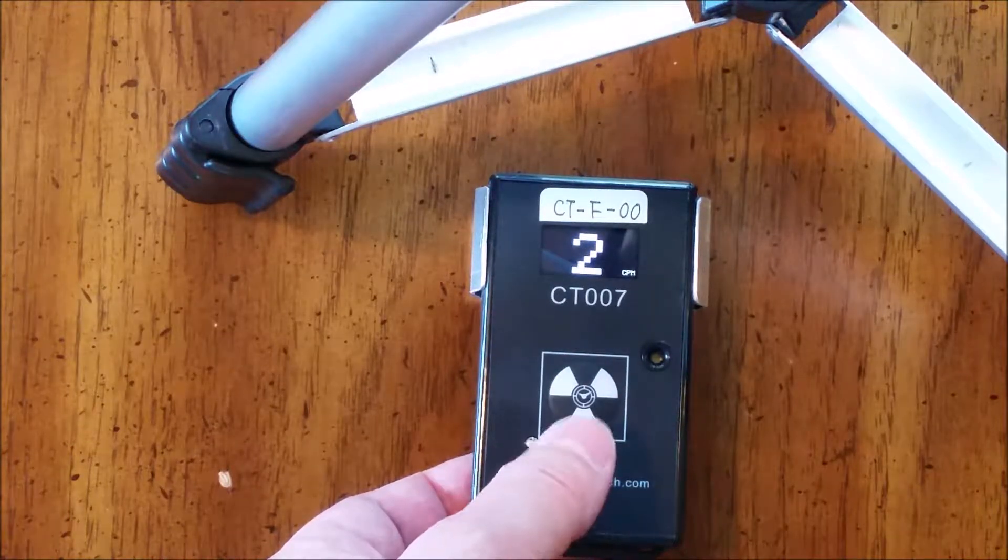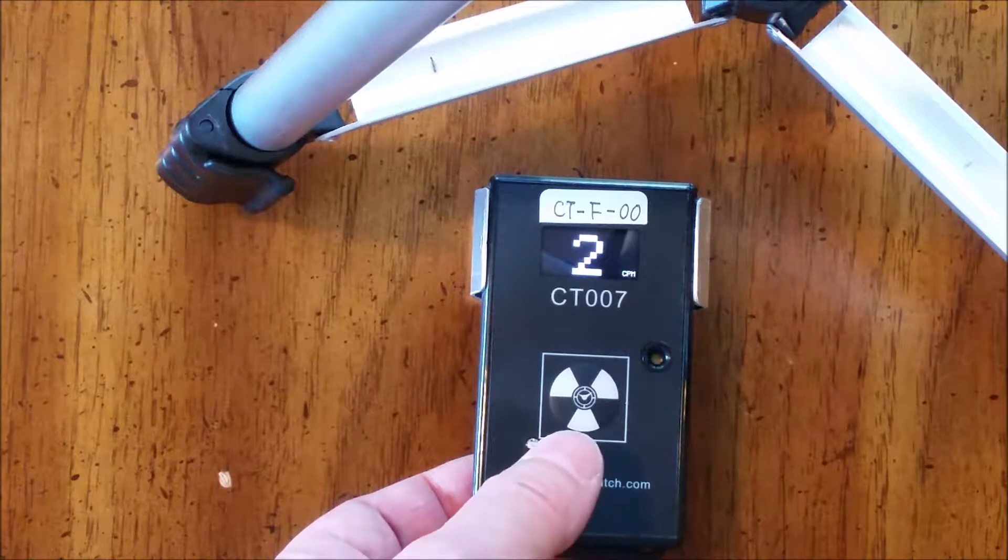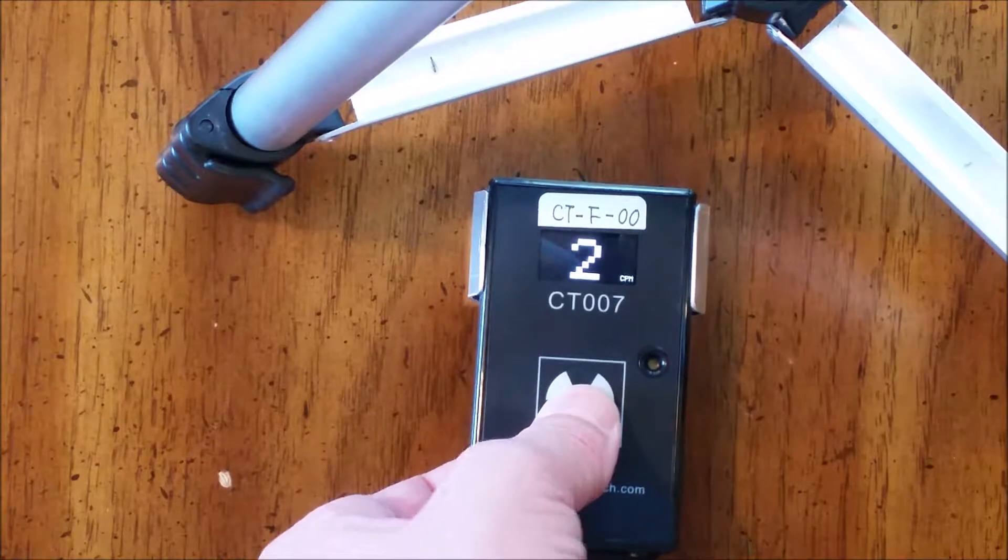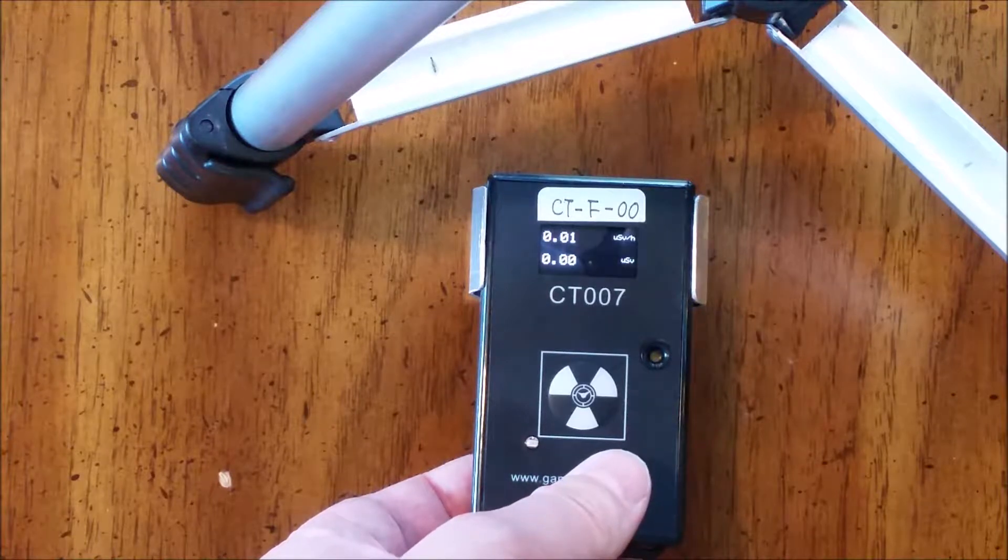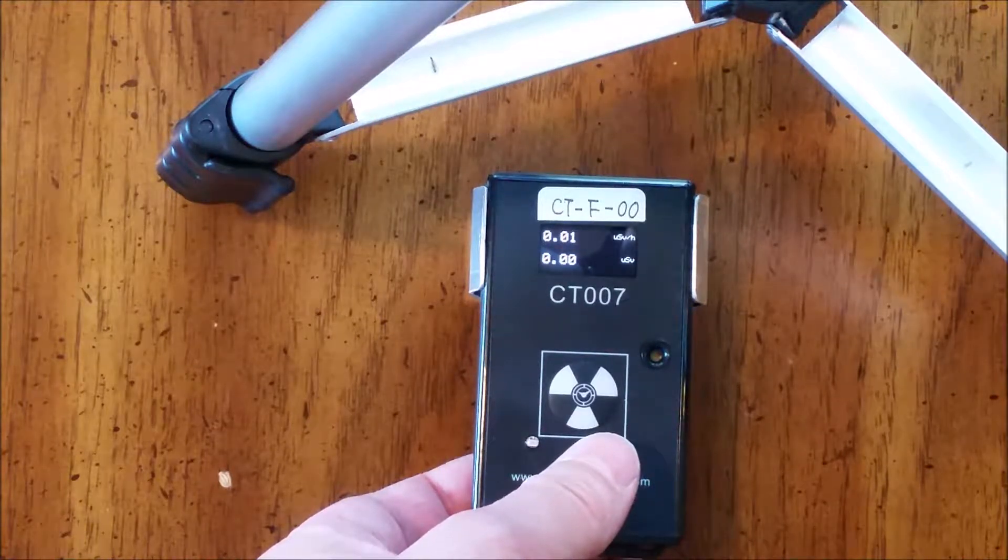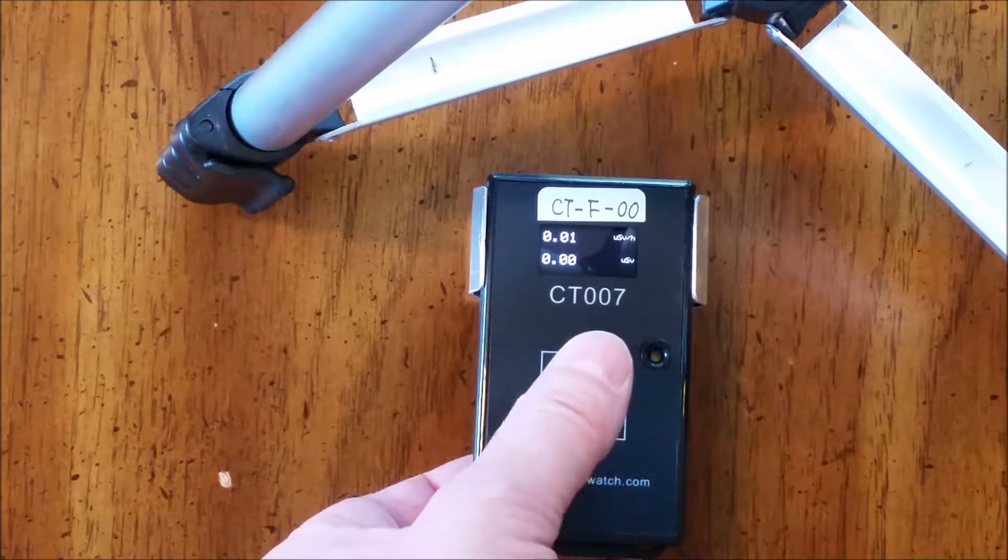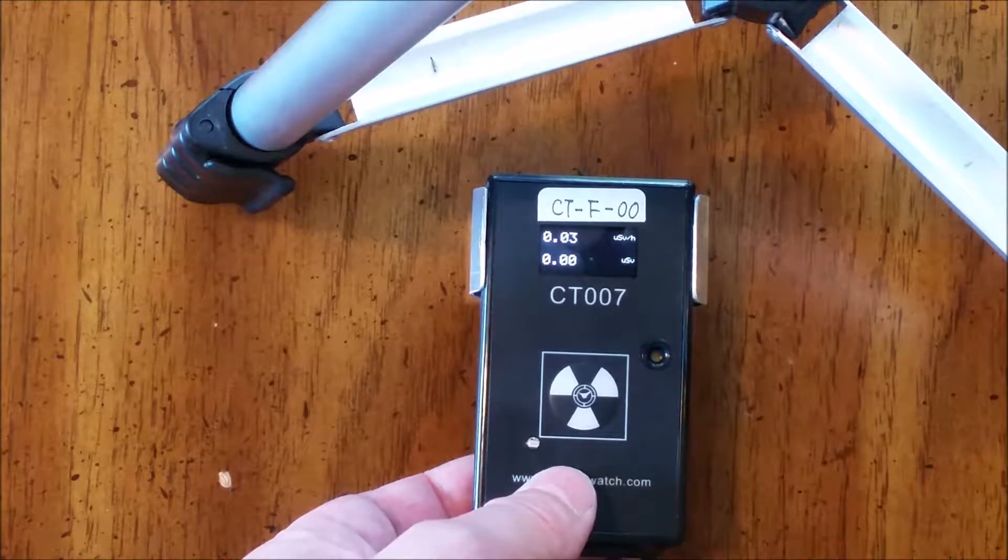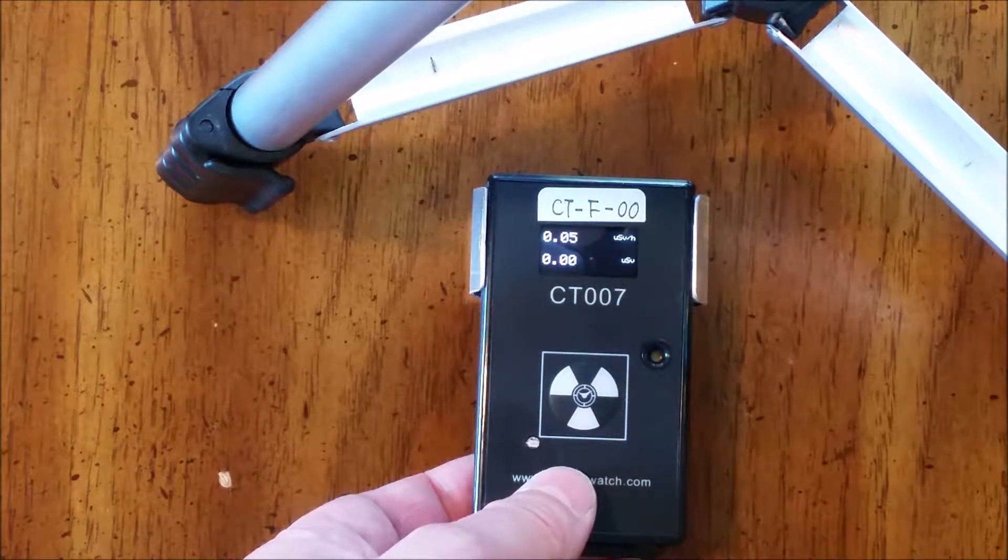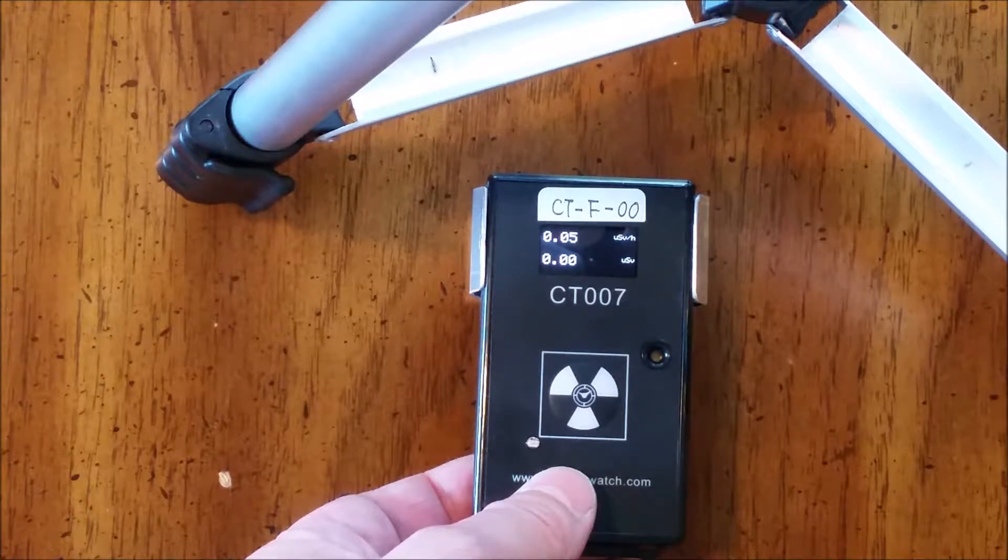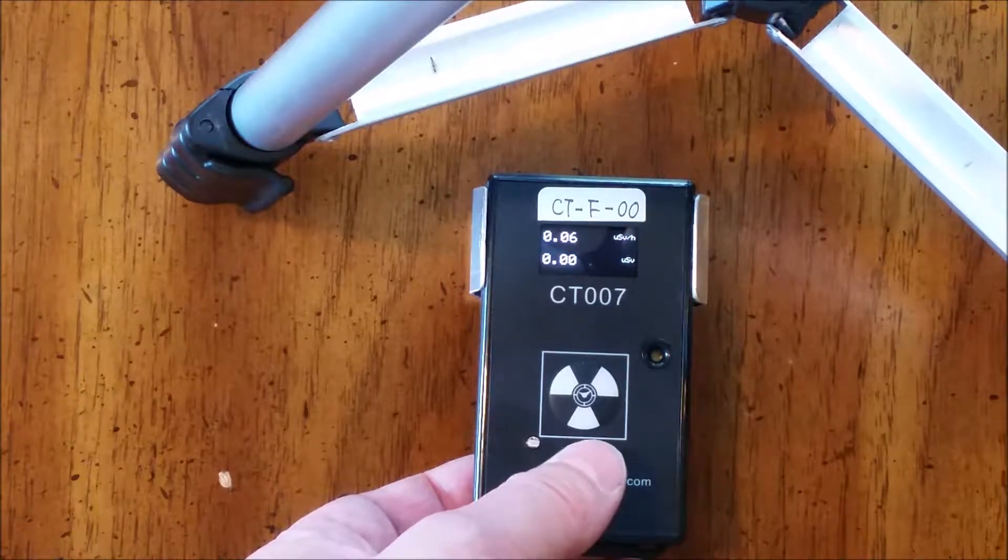A long press turns the unit on and it goes to the CPM display. Short pressing will toggle the display. So here we show the dose rate in microsieverts an hour. We can switch the display to millirem through our Android companion app.